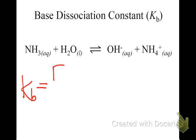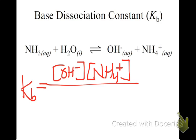So Kb equals the concentration of the products divided by the concentration of the reactants. And once again, we leave off that water. Why? Because it's water. It's a liquid. We only consider aqueous and gases in equilibrium systems.